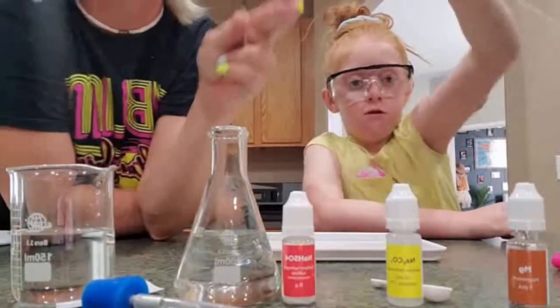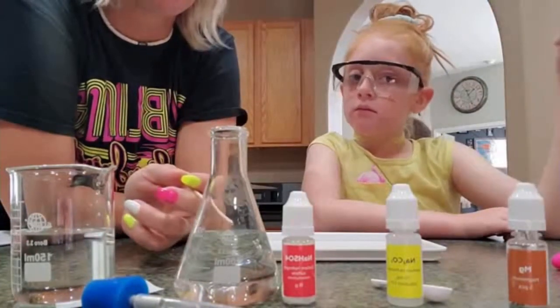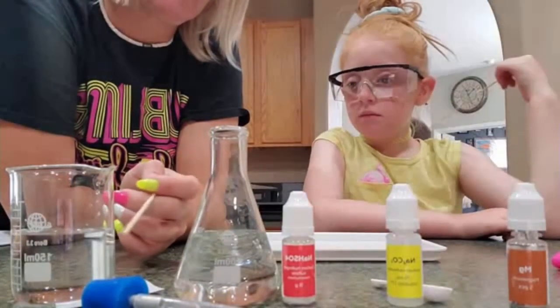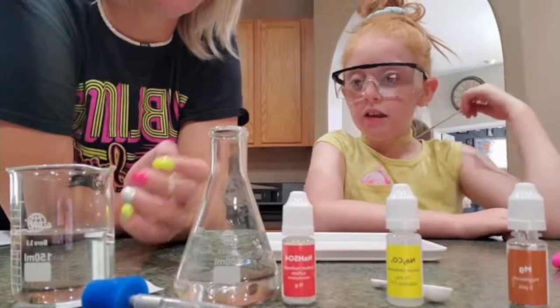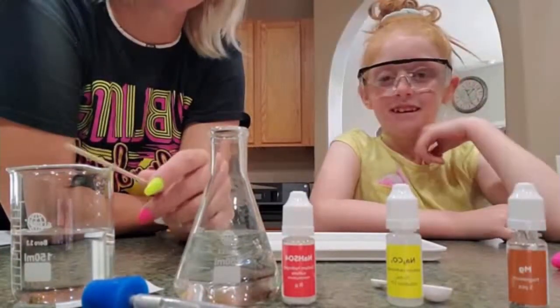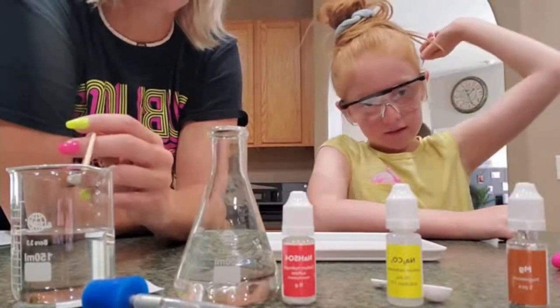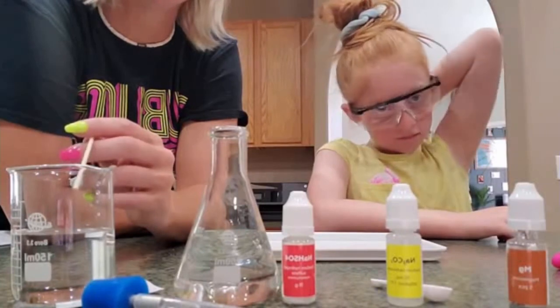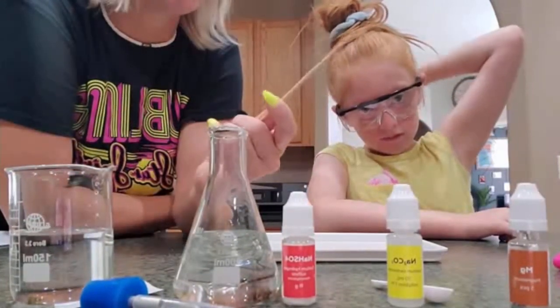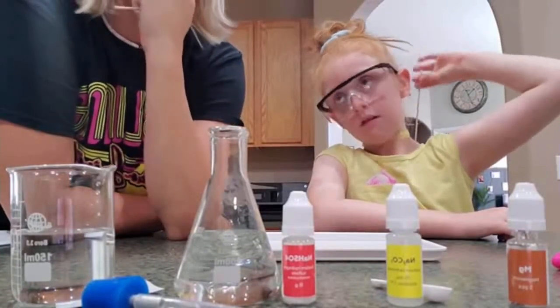Then we'll be swirling some things together, and hopefully if everything goes correctly, we will be making foam build up in our beaker right here. This is a flask, and this is a beaker. So hopefully we are going to have some foam start building up in our beaker over here, and then we'll be able to light one of our splints on fire, touch it to the foam, and see what happens.